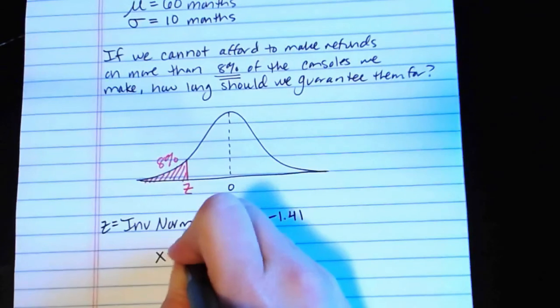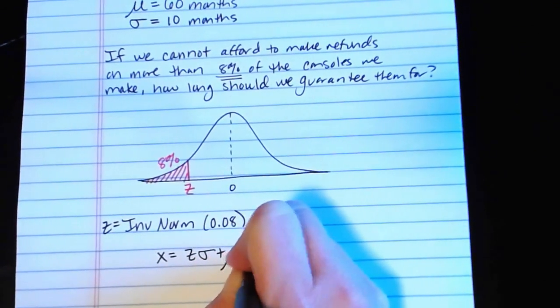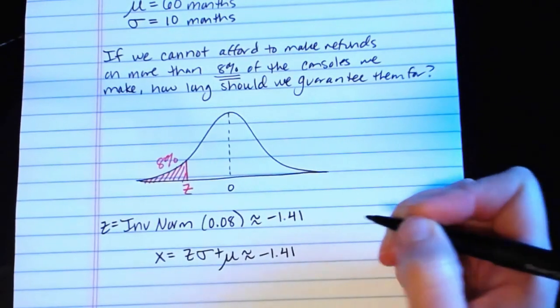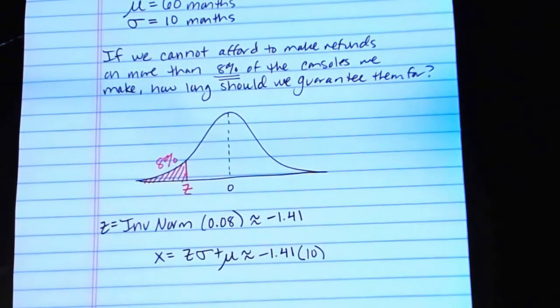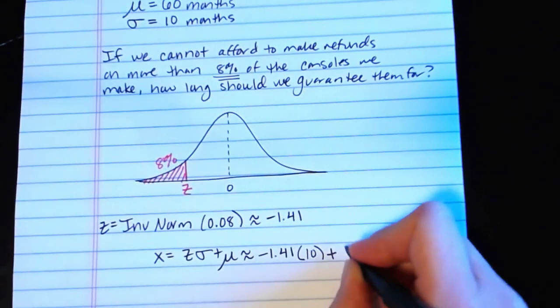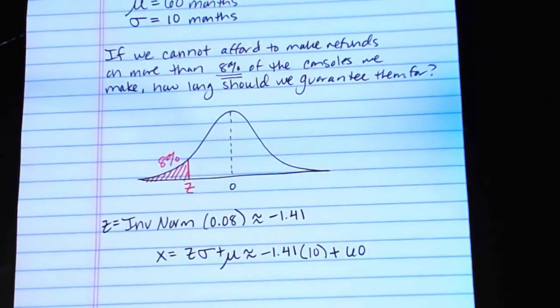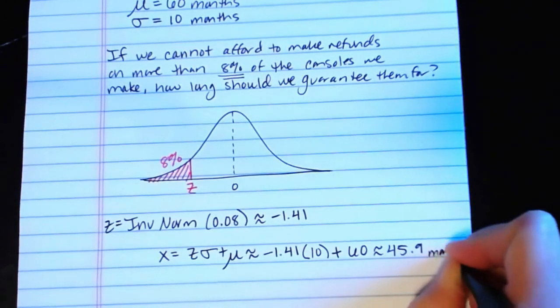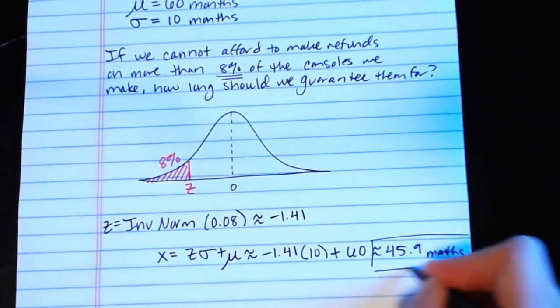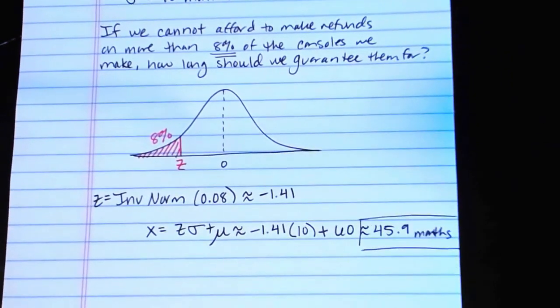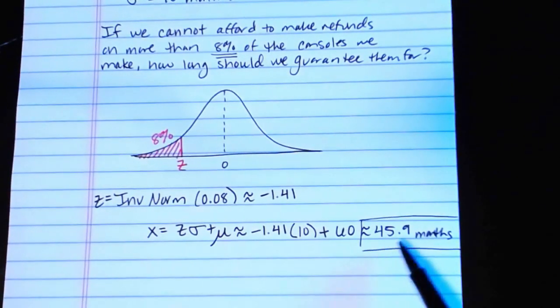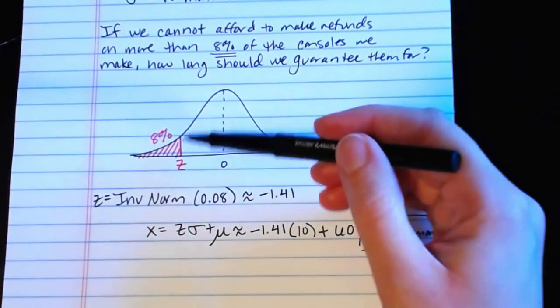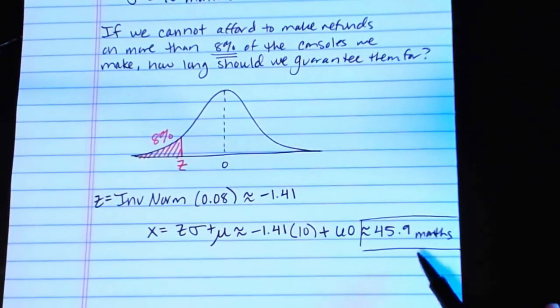The very last step in our process is to take the z-score, convert it back into a raw data value using this formula. So x equals z sigma plus mu. Our z-score was negative 1.41. The standard deviation for our gaming console lifetimes was 10 months. The mean was 60 months. And when we plug all that in, we get 45.9 months. That's how long we should guarantee them for if we don't want to refund more than 8%. Certainly, we could choose to guarantee them for less than that. We could guarantee them for 40 months. But if 8% is the absolute cap, this is as high as we could go, 45.9 months.